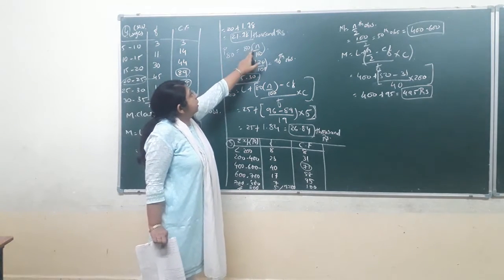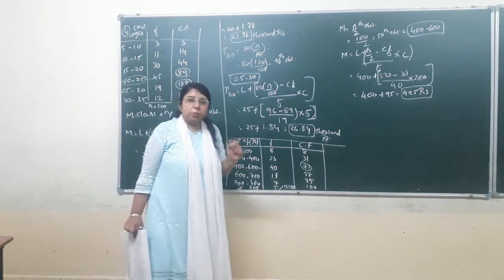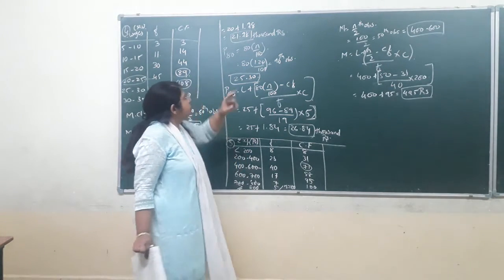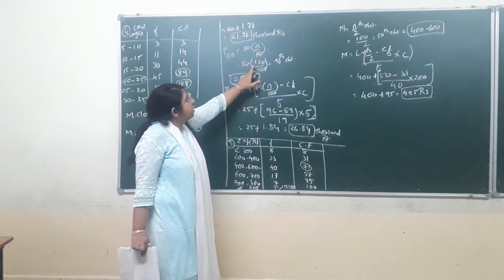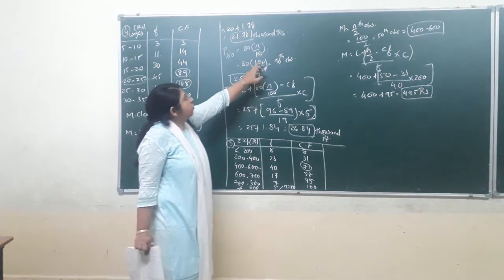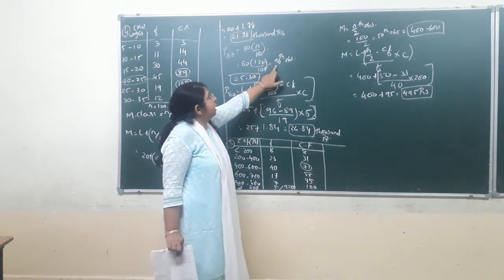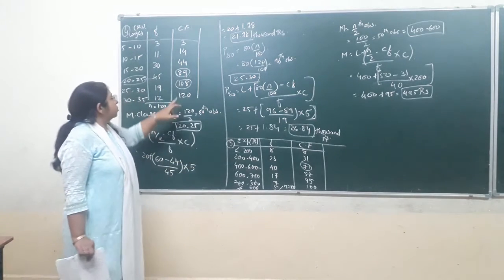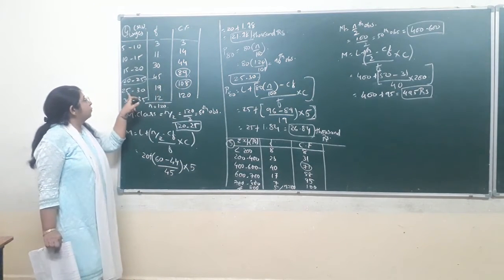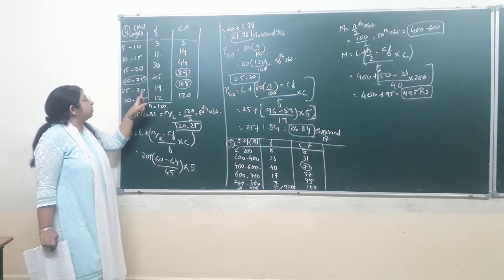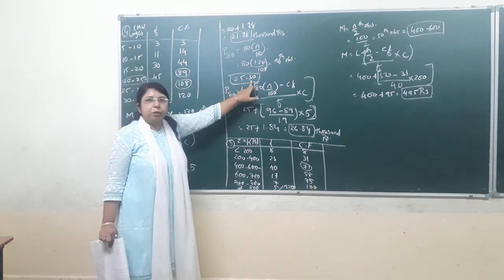For P80, we calculate 80 × N / 100. N is 120, so 80 × 120 / 100 = 96th observation. The 96th observation falls in the cumulative frequency of 108, which corresponds to the class 25 to 30. So the percentile class for P80 is 25 to 30.